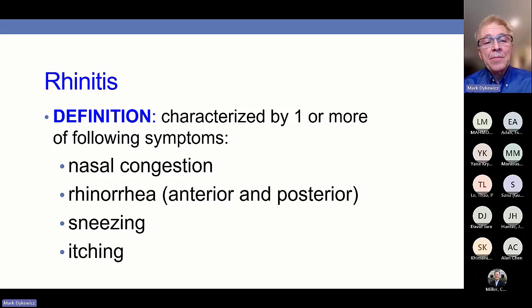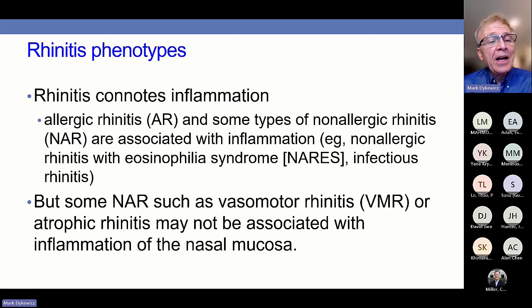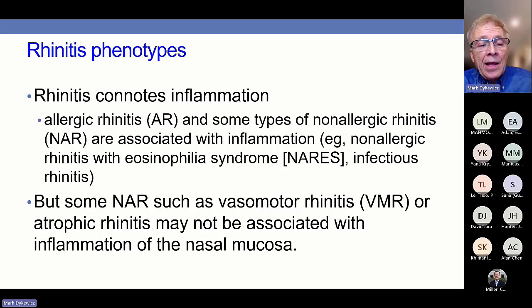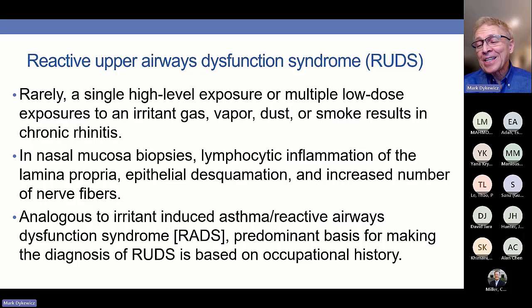The formal diagnosis of rhinitis for the parameter was defined on the basis of symptoms. Those four cardinal symptoms are nasal congestion, rhinorrhea — whether anterior or posterior — sneezing, and itching. The name rhinitis connotes inflammation, but there are certainly some types of non-allergic rhinitis where no inflammation is present, such as vasomotor rhinitis or atrophic rhinitis.